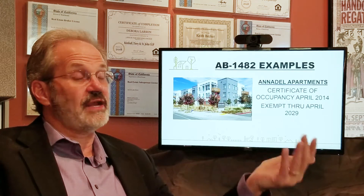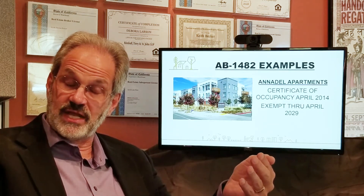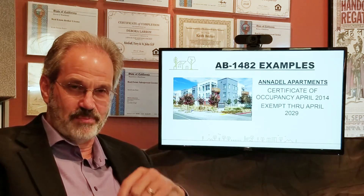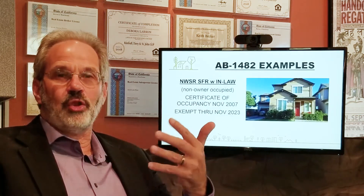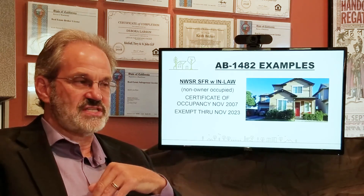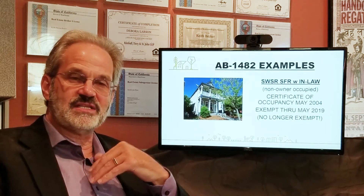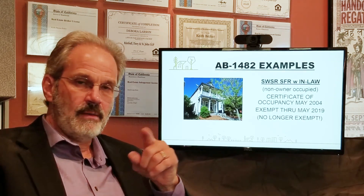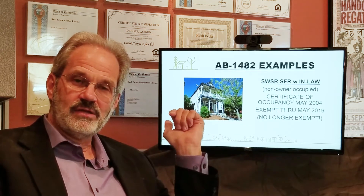Annadale Apartments, a complex with hundreds of units, was built in April 2014 — all other things being equal, it would be exempt through April of 2029. A Northwest Santa Rosa property that is not owner-occupied was built in November 2007 and is exempt through November of 2023 — only a few years from now. One managed property in Southwest Santa Rosa, also not owner-occupied, had a certificate of occupancy in May of 2004, meaning that 15-year exemption expired in May of 2019, so this property is not exempt.